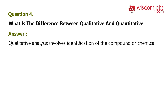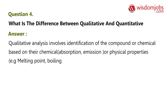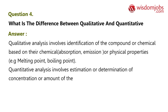Examples of qualitative properties include melting point and boiling point. Quantitative analysis involves estimation or determination of the concentration or amount of chemical compounds or components.